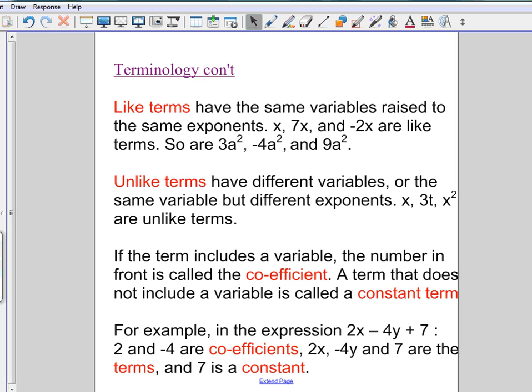The next part gets a little bit tricky because the terms sound very much the same. So you have coefficients and you have constants. A term that has a variable, so something like 2x, will have something called a coefficient. And the coefficient is the number in front of the variable. In this case, the coefficient would be 2.